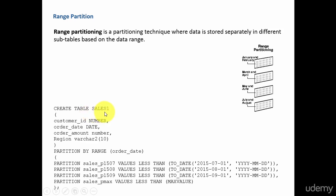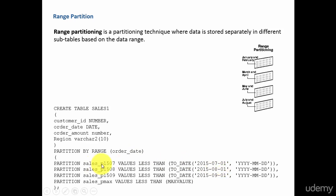Here, I am creating a table called sales1 and I am partitioning by range. The column I am using for the range is order date. That means based on the order date range, I am dividing the data into partitions. Here it is the partition name, values less than 2015 July. That means all the data for the order date less than 2015 July 1st will be stored in partition salesP1507. And all the order rows with the order date less than or equal to 2015 August 1st will be stored under partition salesP1508. And all the rows with the order date less than 2015 September 1st will be stored in salesP1509.